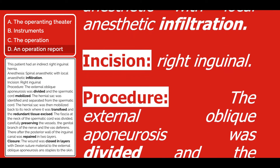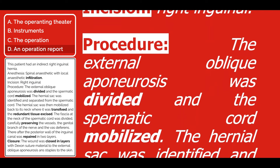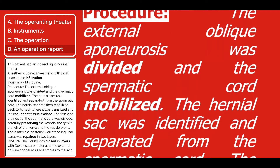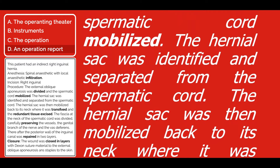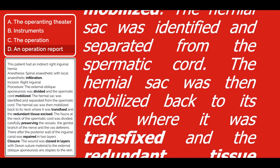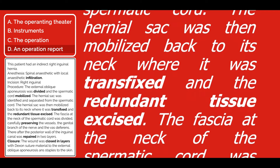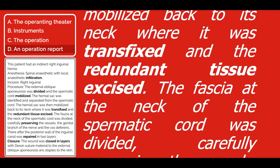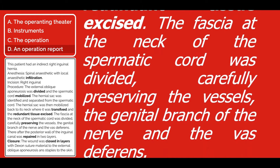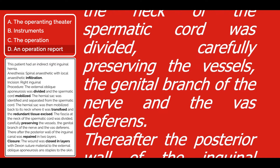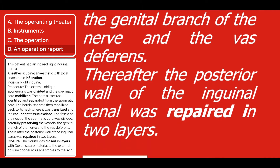Procedure. The external oblique aponeurosis was divided and the spermatic cord mobilized. The hernial sac was identified and separated from the spermatic cord. The hernial sac was then mobilized back to its neck, where it was transfixed and the redundant tissue excised. The fascia at the neck of the spermatic cord was divided carefully, preserving the vessels, the genital branch of the nerve, and the vas deferens. Thereafter, the posterior wall of the inguinal canal was repaired in two layers.